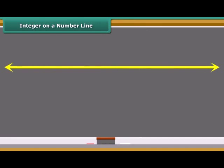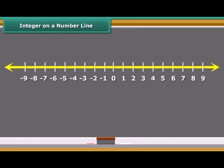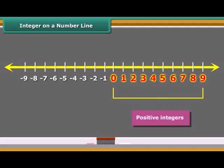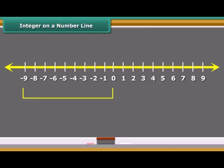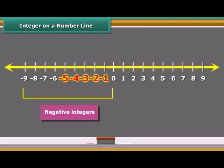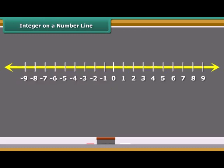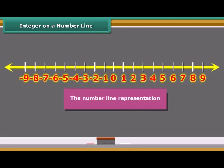This figure represents a line marked with some points at equal distance. A point on it is marked as zero. Points to the right of zero are positive integers. Points to the left of zero are negative integers and are marked minus 1, minus 2, minus 3, and so on. This type of representation of integers is called the number line representation.